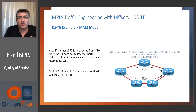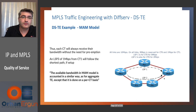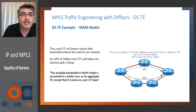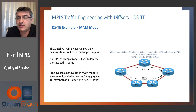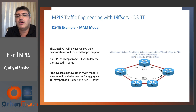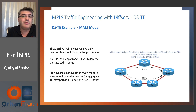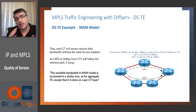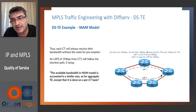So far so good. Each CT will always receive their bandwidth without the need for preemption. LSP3 can be set up with 1 MB and it will use the shortest path also. The available bandwidth in the MAM model is accounted in a similar way as for aggregate TE, except that it's done on a per-class basis.